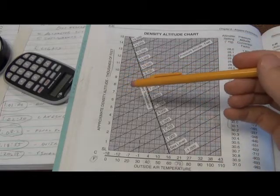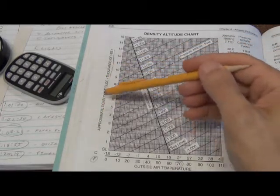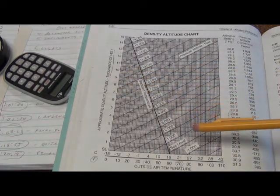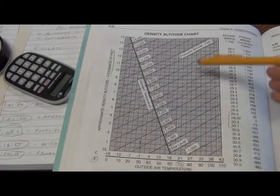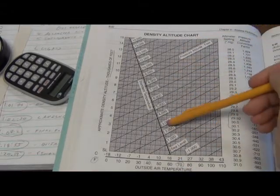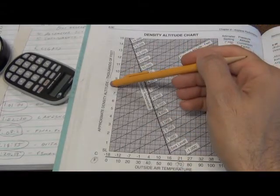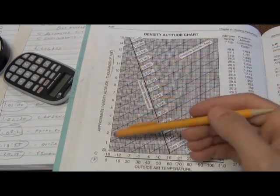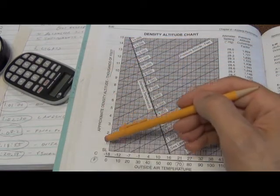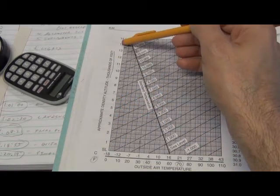The final bit of information is the answer that we're looking for, the density altitude. What every question will give us or make us find is the temperature and the pressure altitude. Once we have those two, we can look across to the left side of the chart and get the answer, which is the density altitude. Now the density altitude, even though it's written as one, two, three, four whole numbers going up,